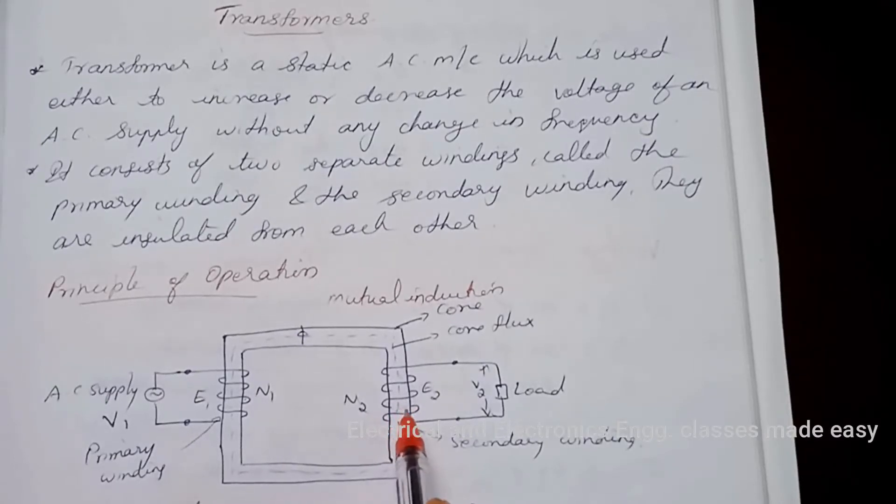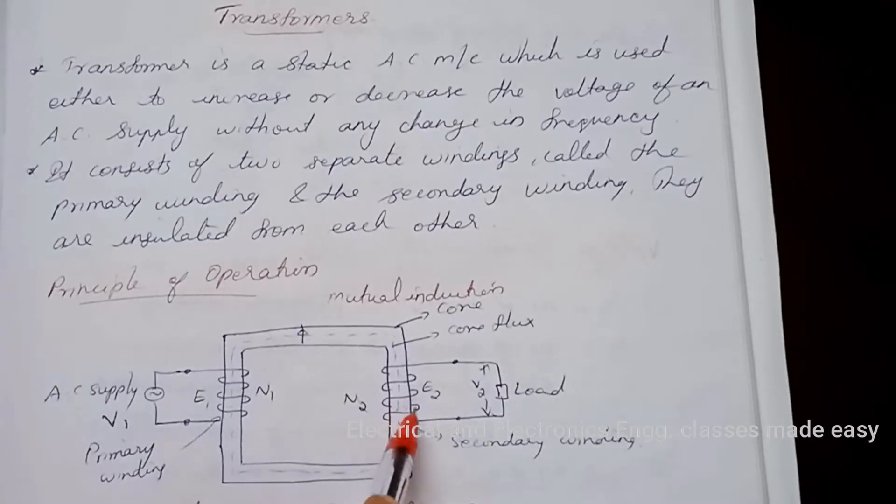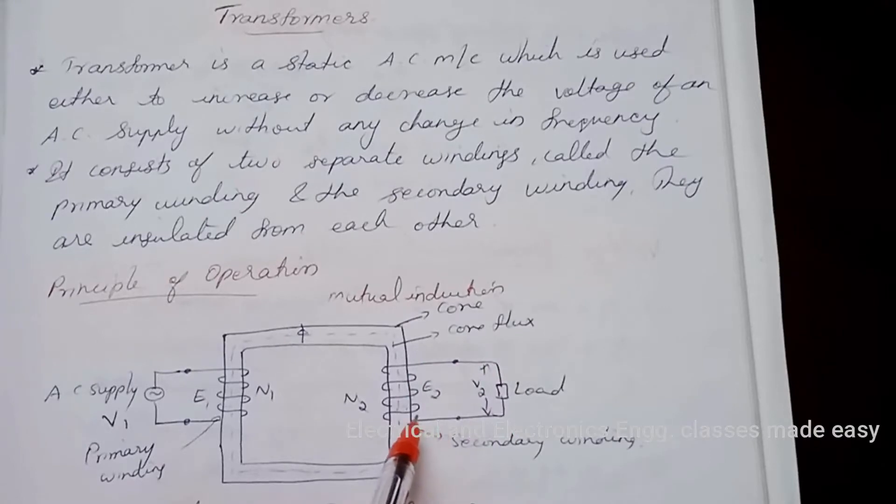The alternating flux in the secondary winding produces an EMF in it, called the mutually induced EMF. If the secondary circuit is closed, then the current will flow through the secondary circuit.